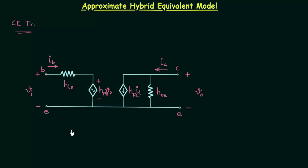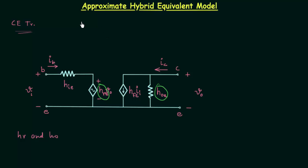For common emitter and common base configurations, the magnitudes of hr and ho are such that the results obtained for parameters like input impedance, output impedance, voltage gain, and current gain are only slightly affected if hr and ho are not included in the circuit. This means if we remove hre and hoe from the circuit, the important parameters — input and output impedances, current gain, and voltage gain — will not change.